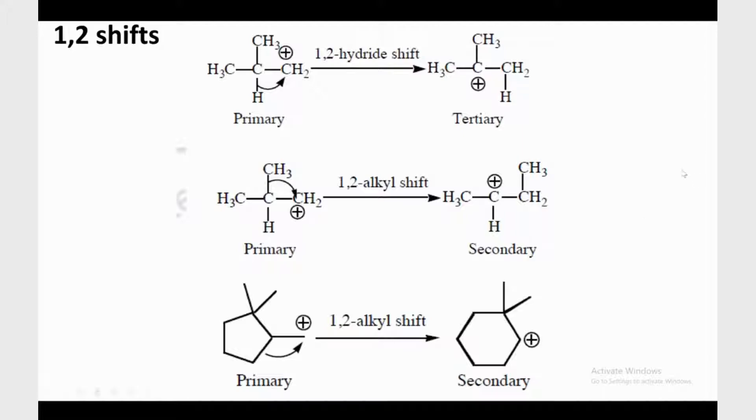Let's have a look at 1,2 hydride shift. So you have a primary carbocation, as you know it's really unstable compared to secondary and tertiary. So what happens in that situation? One of the hydrogens from the neighboring atom is shifted towards that primary carbocation, and as a result the carbocation will become tertiary. So that's called 1,2 hydride shift.